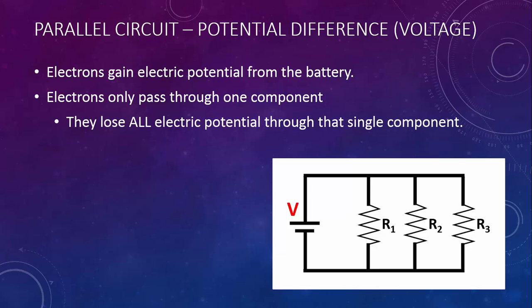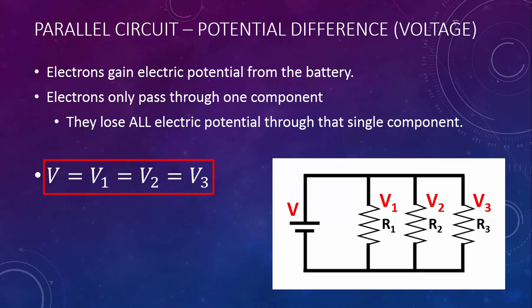If you and two friends are going snowboarding, you gain the same amount of gravitational potential energy as you go up the chairlift. And even if one of you takes a beginner trail, one takes an intermediate trail, and one takes an expert trail to the bottom, you all lose that same amount of gravitational potential energy. In a parallel circuit, the potential difference across each component is the same.